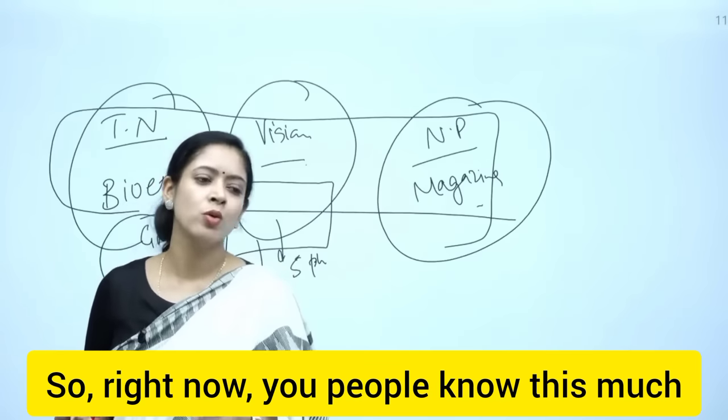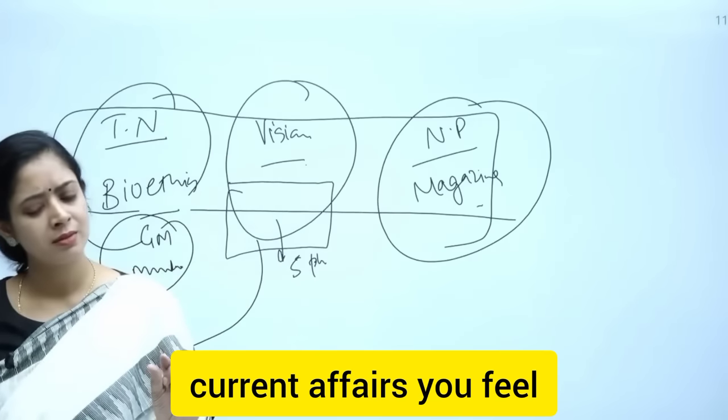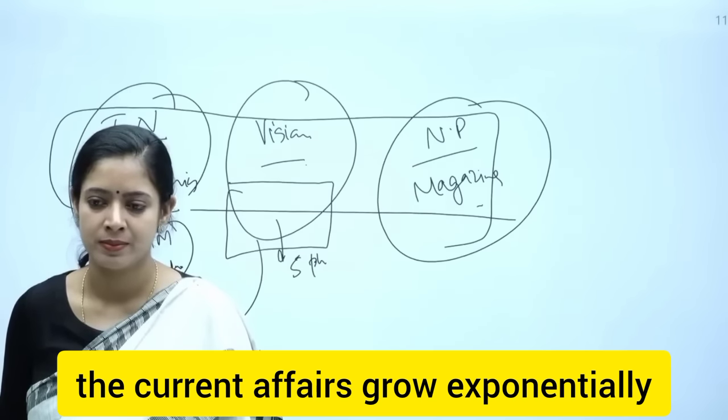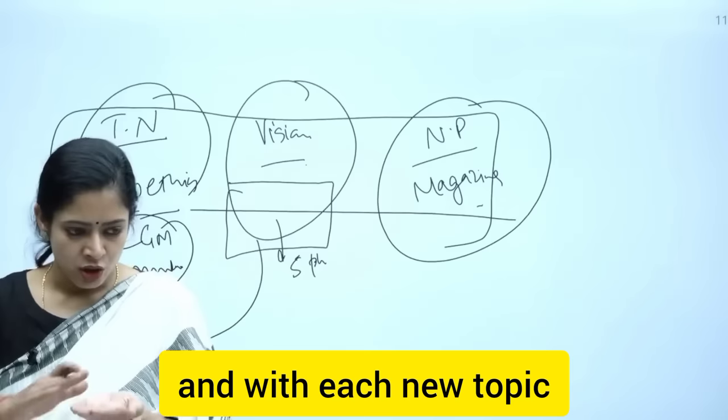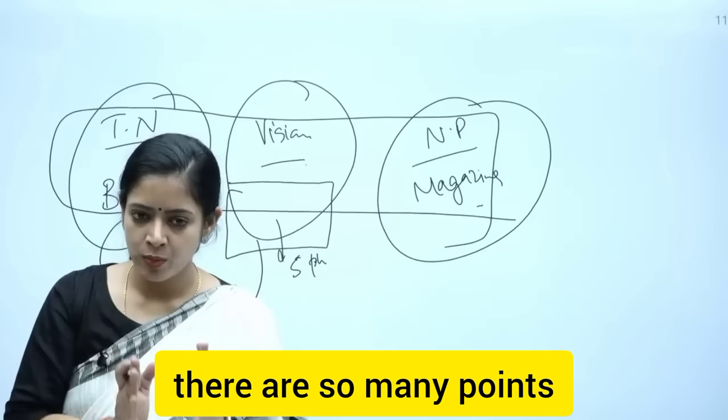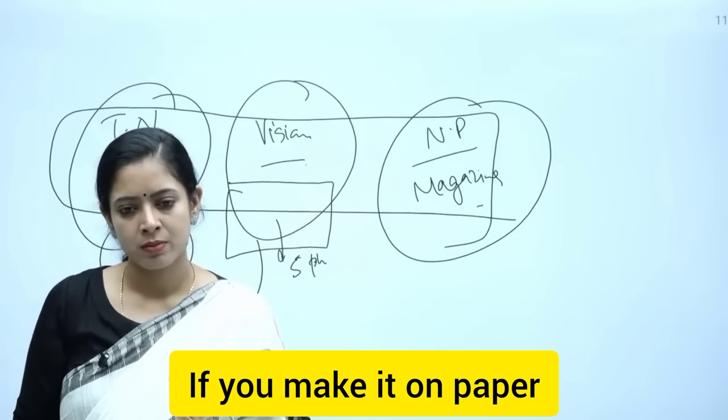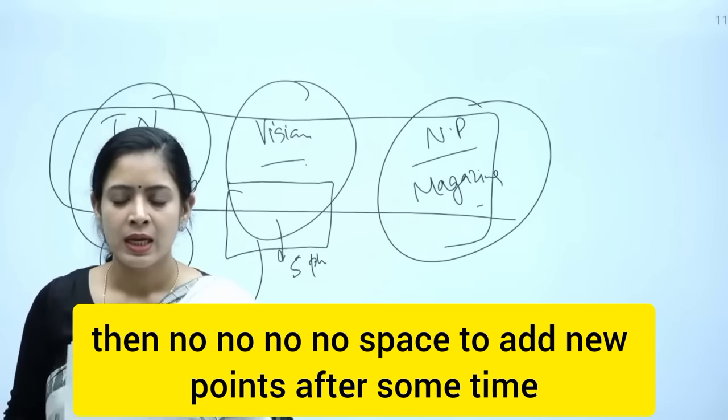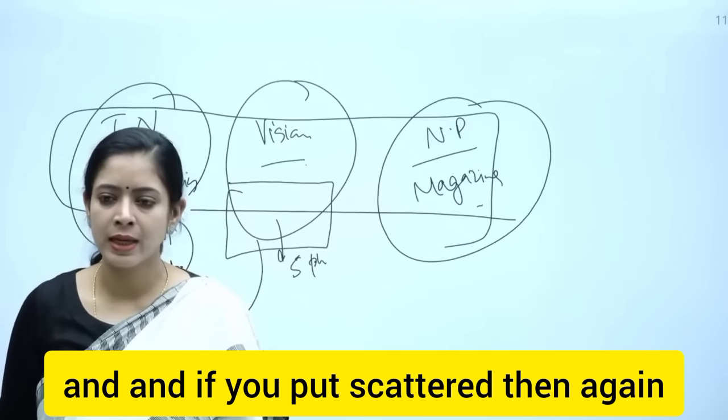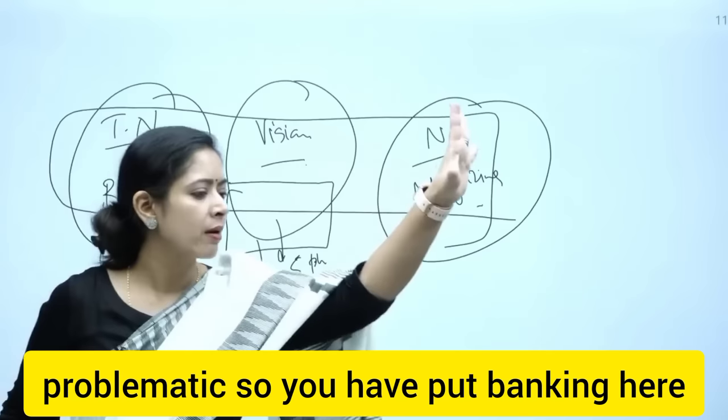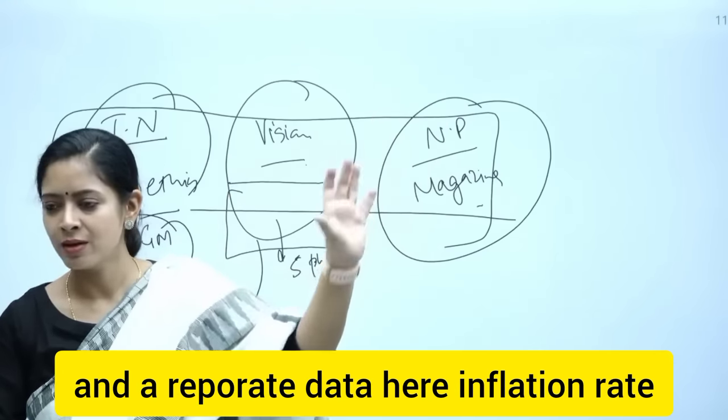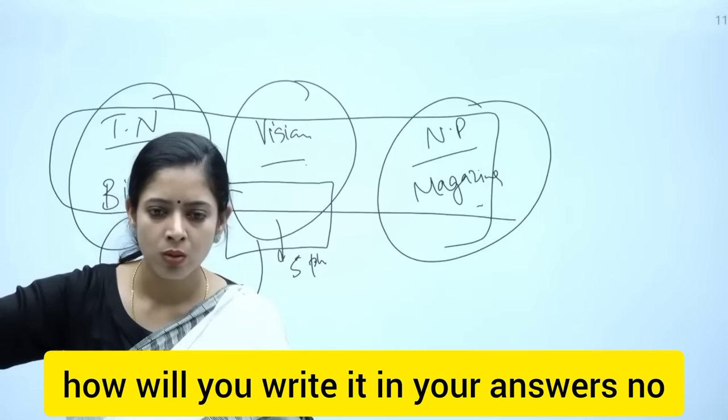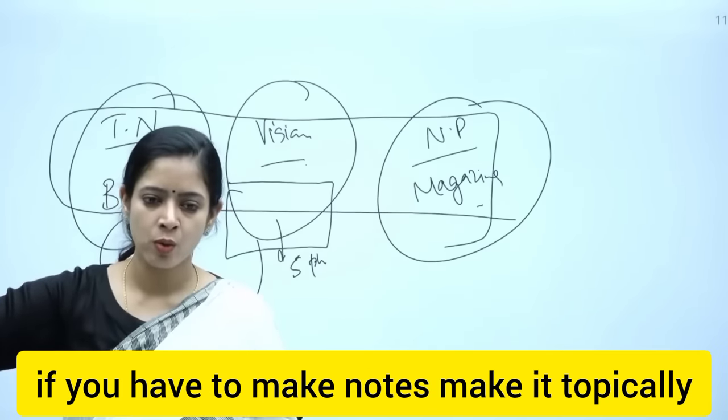Right now you people know this much current affairs, but after some time you will realize the current affairs grow exponentially. With each new topic, there are so many points that you have to do. If you make it on paper, then there's no space to add new points after some time. If you put it scattered, then again it's problematic. You have put banking here, economic current affairs here, repo rate data here, inflation rate—how will you write it in your answers? Not possible. If you have to make notes, make them topically.